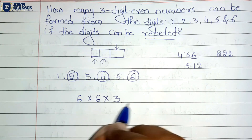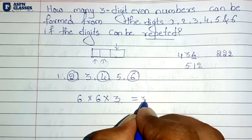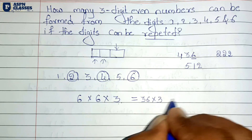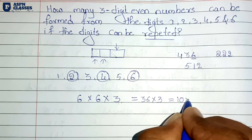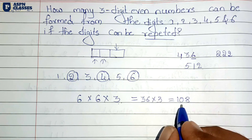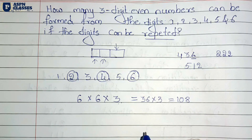By the multiplication principle: 6 into 6 into 3. That gives 6 into 6 is 36, and 36 into 3 is 108. So the answer is 108.